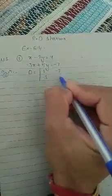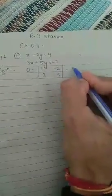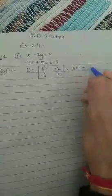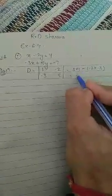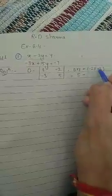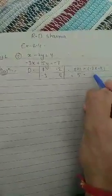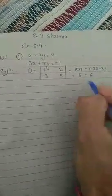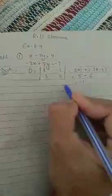Which is equal to 1 times 5 minus minus 2 times minus 3. Which is 5 minus 6, that is equal to minus 1. So the value of D is minus 1.